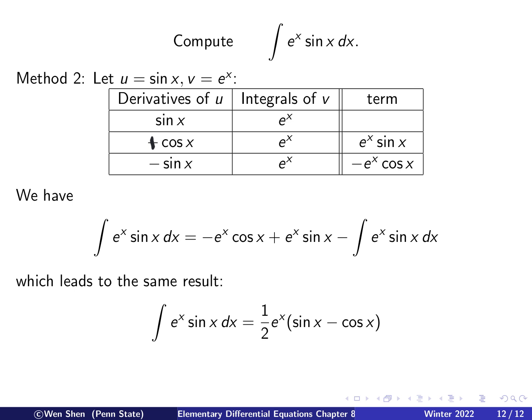Once you get fluent with this tabular method, it is not that complicated to work out. The main thing to be careful about is the alternating signs both when entering terms into the table and when collecting the products into the final solution. That's all I wanted to cover on the tabular method. Next time we will use this to compute Fourier coefficients for functions we're interested in. I hope you enjoyed this video and I'll see you next time.